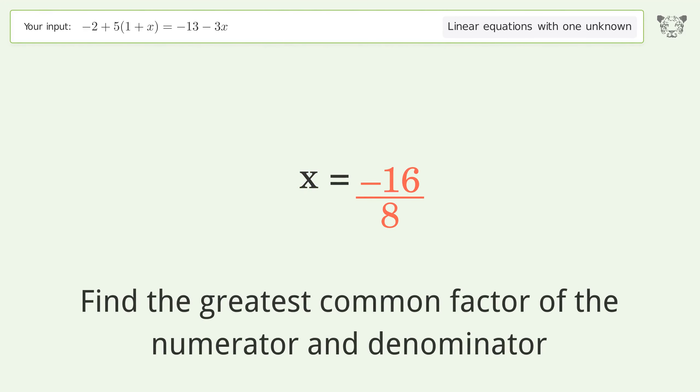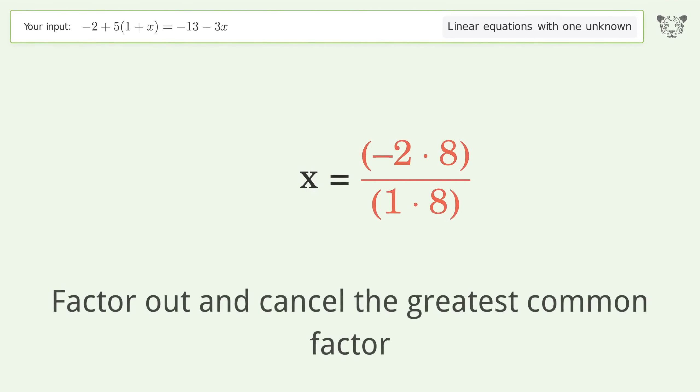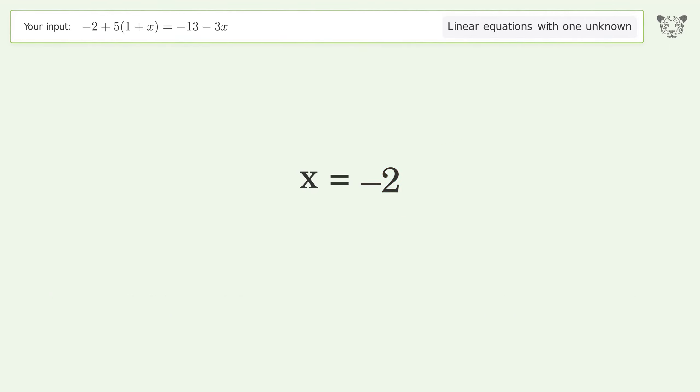Find the greatest common factor of the numerator and denominator. Factor out and cancel the greatest common factor. And so the final result is x equals negative 2.